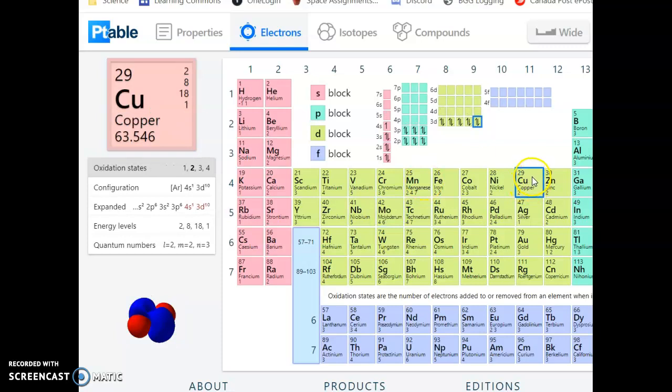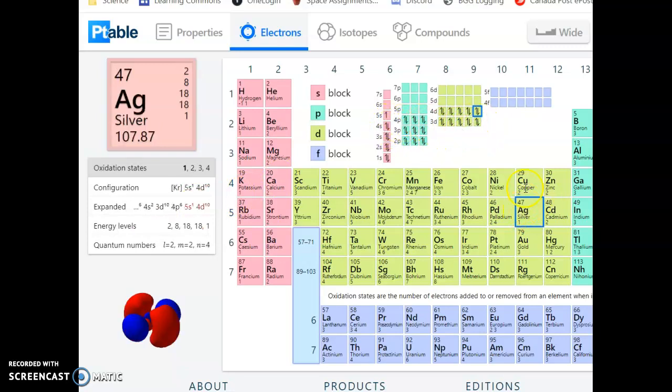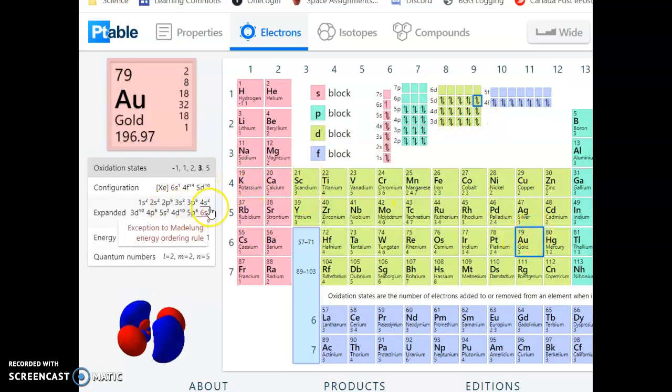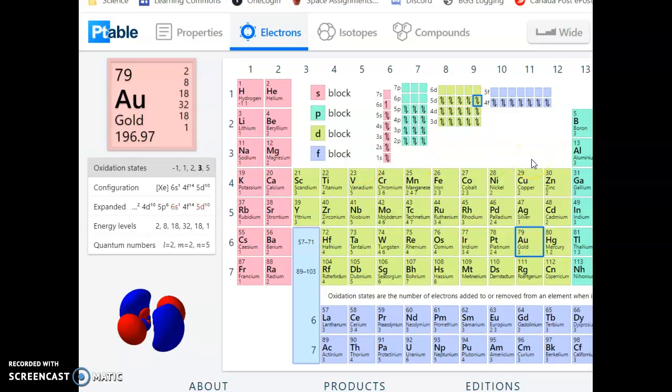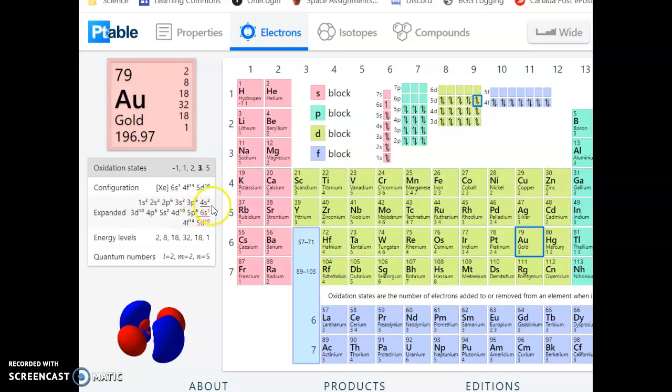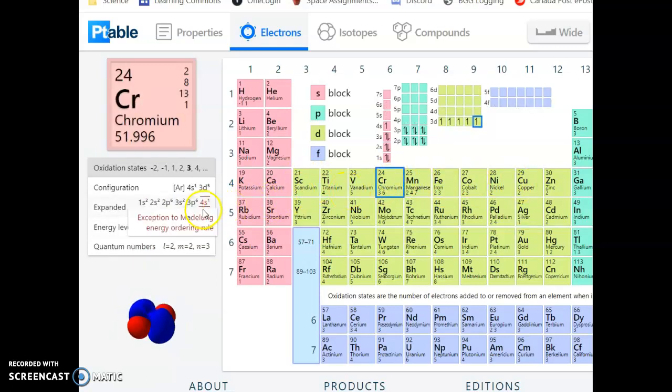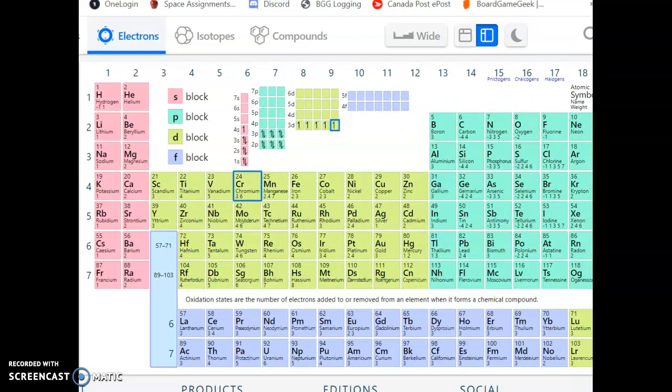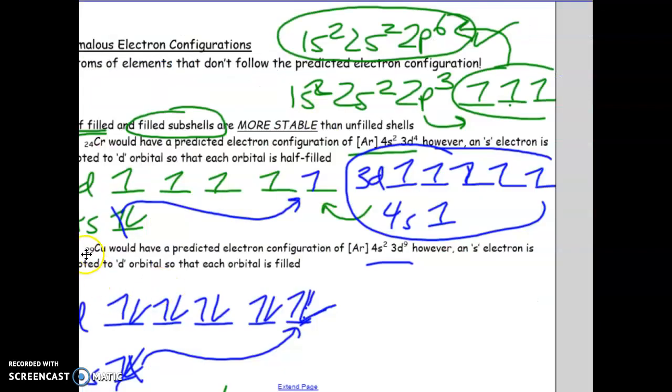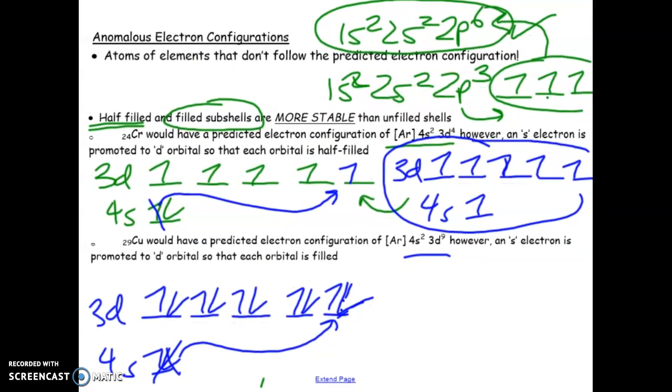For example, we go to copper. Copper, again, is showing that it's an exception. 4s1, 3d has a full set. Silver works in the same way. And gold as well, if I'm not mistaken, yes. When you're looking at elements on the periodic table, if you see something that's highlighted in red when you're looking at it, just know that the reason for that is because of stability. Filled orbital sets, obviously, is the best case scenario. But half-filled is really the next best thing.